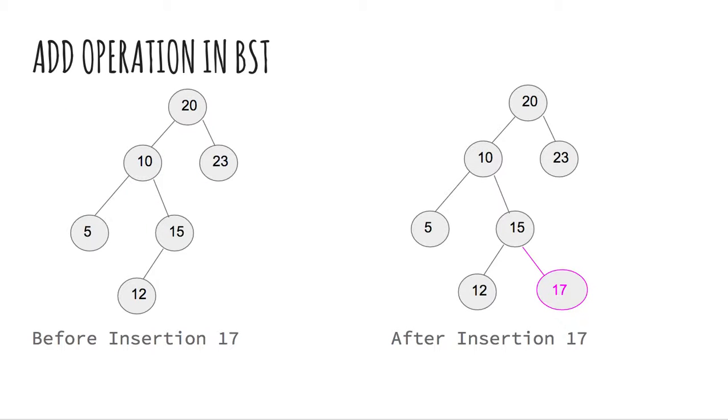Now, let's try to look at insertion in a binary search tree. In this tree on the left, let's try to insert the value 17. First, we compare this value against 20 which is the root and 17 is less than 20. So, we go and search towards the left subtree. Now, we compare 17 with 10. 17 is greater than 10.